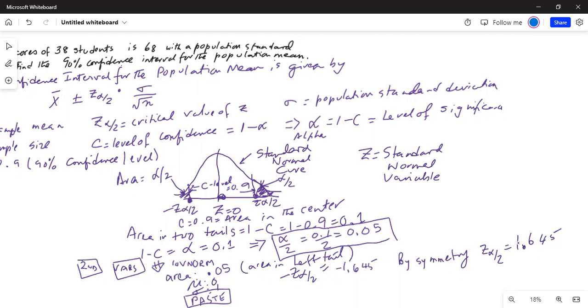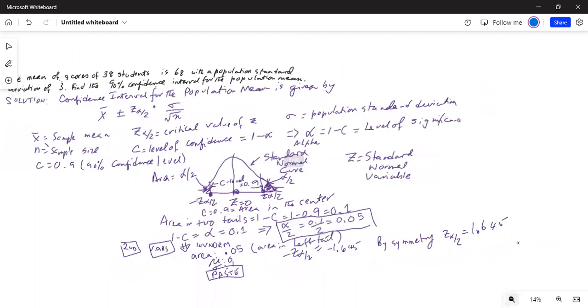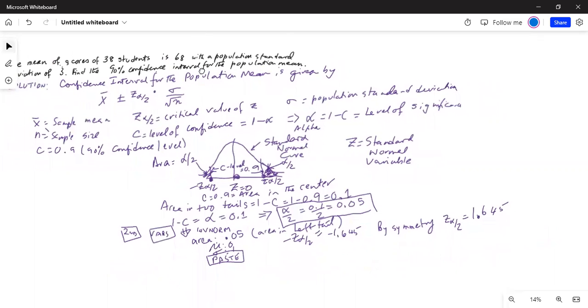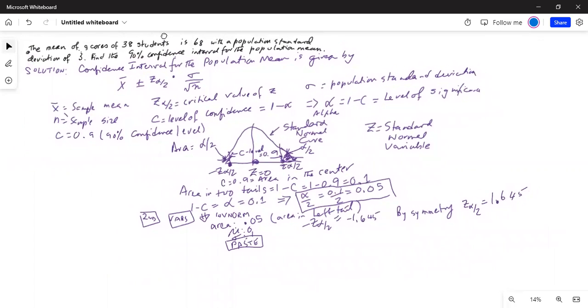This is the value we are going to use in the formula. My confidence interval is x bar plus minus z alpha by 2 multiplied by sigma divided by square root of n. In my case, the mean is 68 plus minus 1.645 multiplied by my population standard deviation 3, divided by square root of 38.